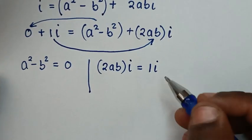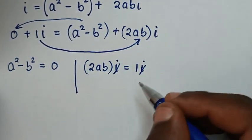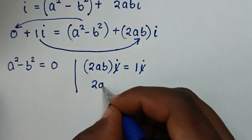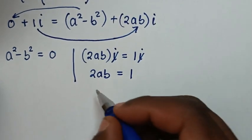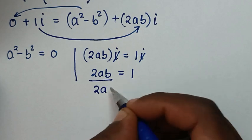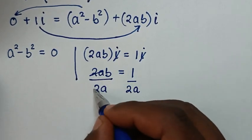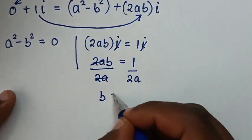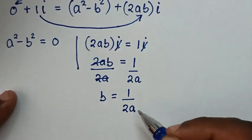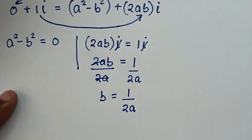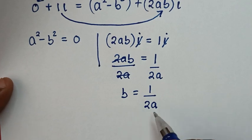So it will be: a² minus b² is equal to 0, and 2ab·i is equal to 1·i. The i cancels, so 2ab is equal to 1. Then we divide by 2a on both sides, so it will be b is equal to 1 over 2a.